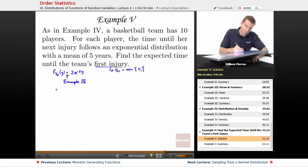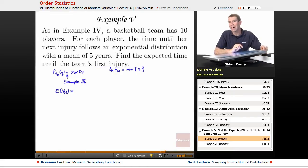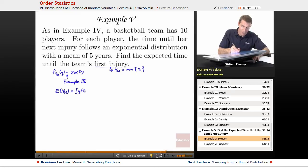I want to find the expected value of y1, and there's a quick way to do this but I'm going to hold off on that. I'm going to do it using the definition and then we'll see how we could have found the expected value very quickly. It's the integral of y times f of y dy, so in this case it's the integral of y times 2e to the negative 2y dy, and I need to do a little integration by parts to make that work.